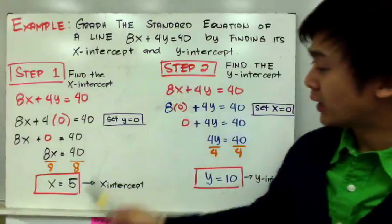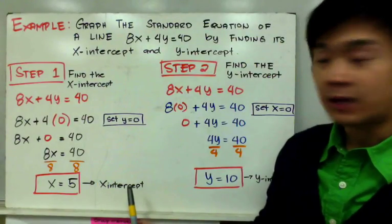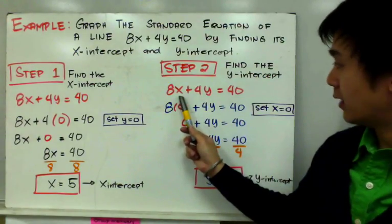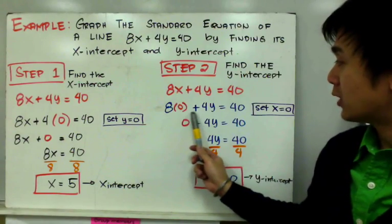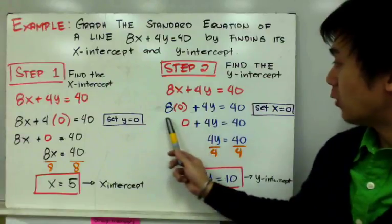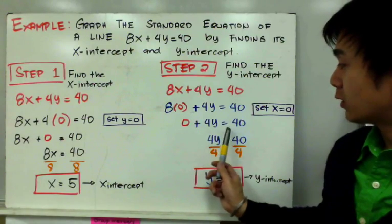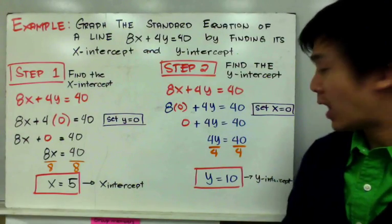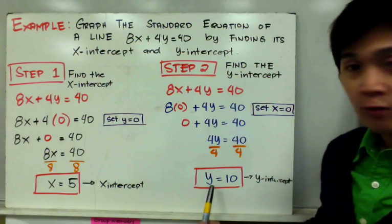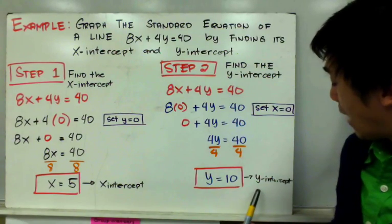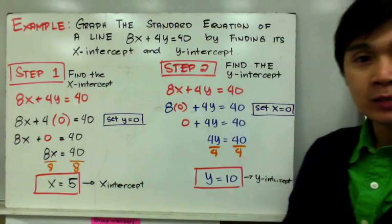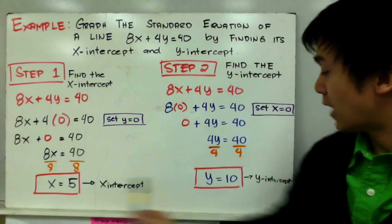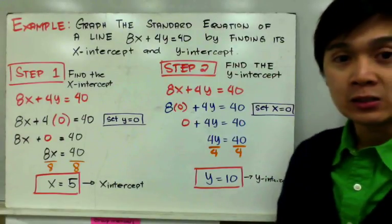For step 2, we find the y-intercept by setting x to 0. So we have 8 times 0 plus 4y equal to 40, which gives us 4y equal to 40. Dividing both sides by 4, we get y equal to 10 — this is our y-intercept. Since intercepts are points, the x-intercept becomes (5, 0) and the y-intercept becomes (0, 10).